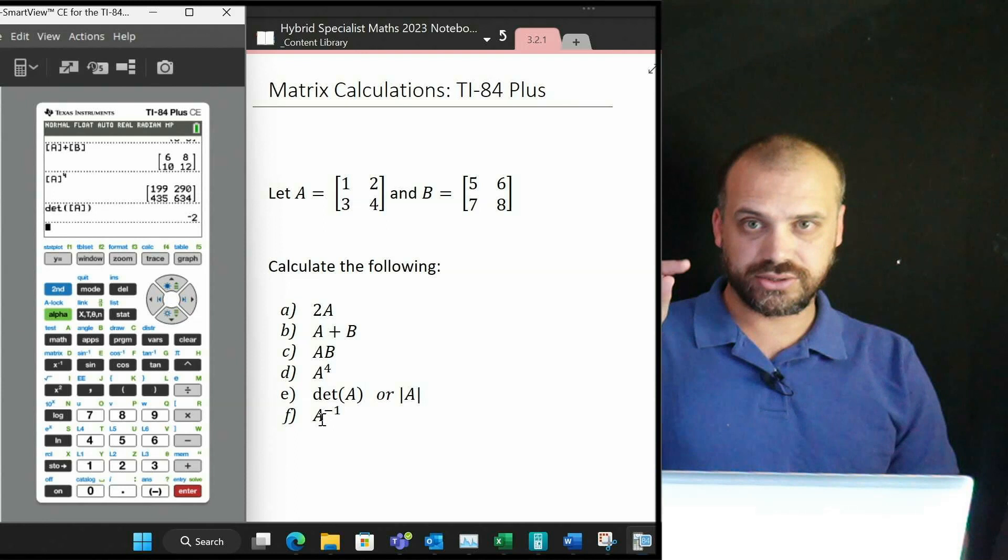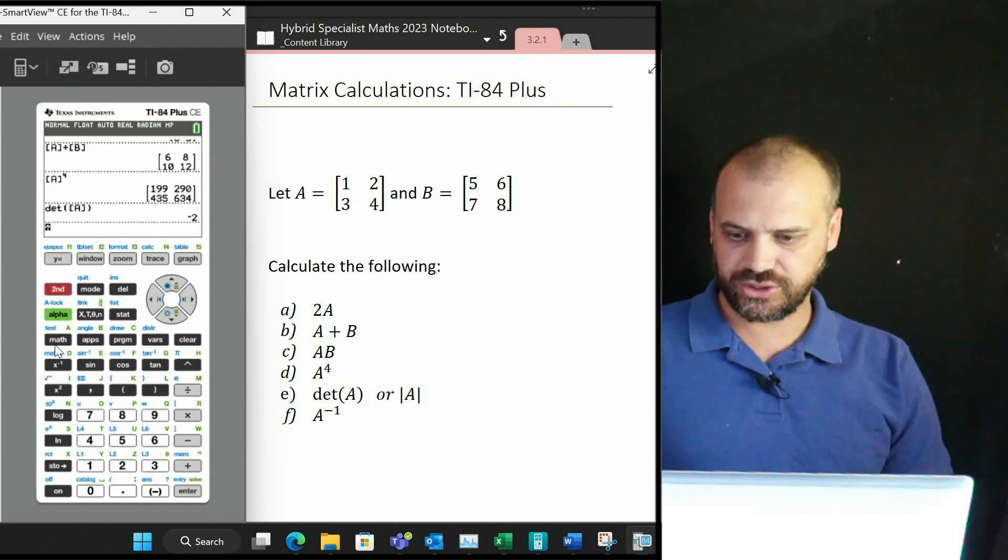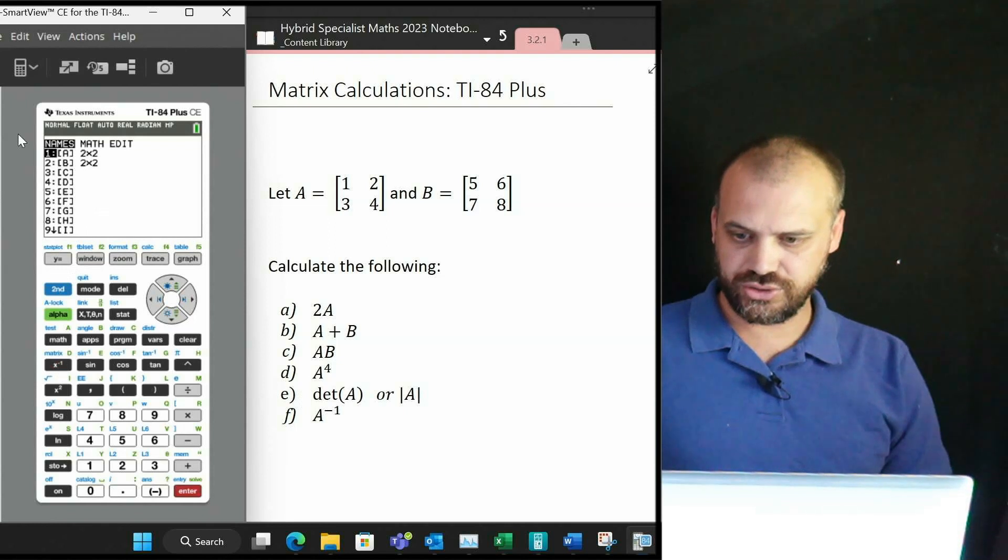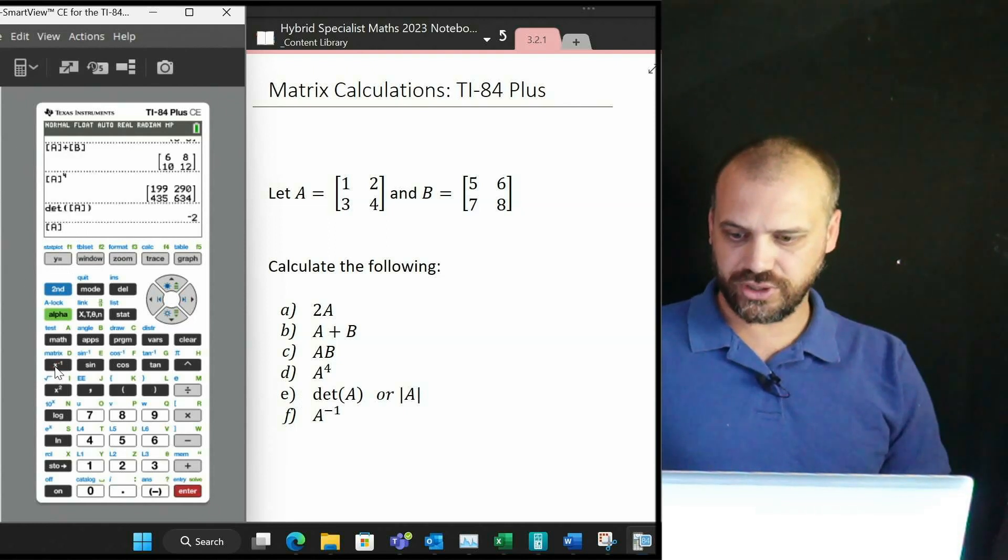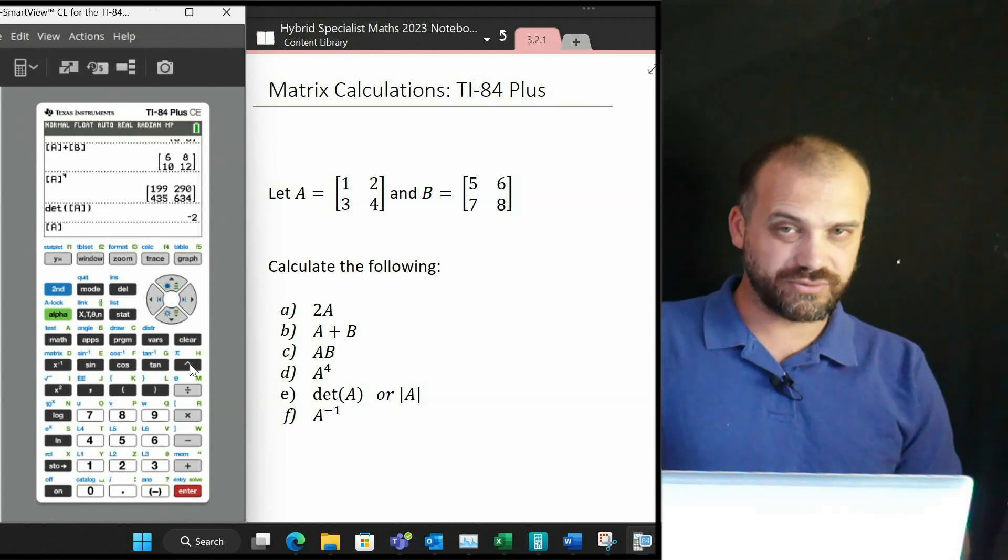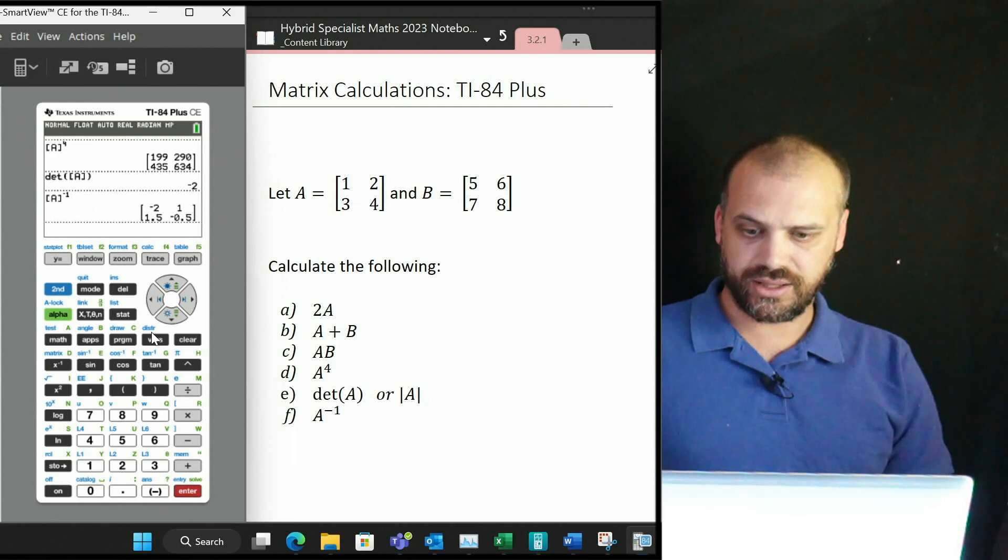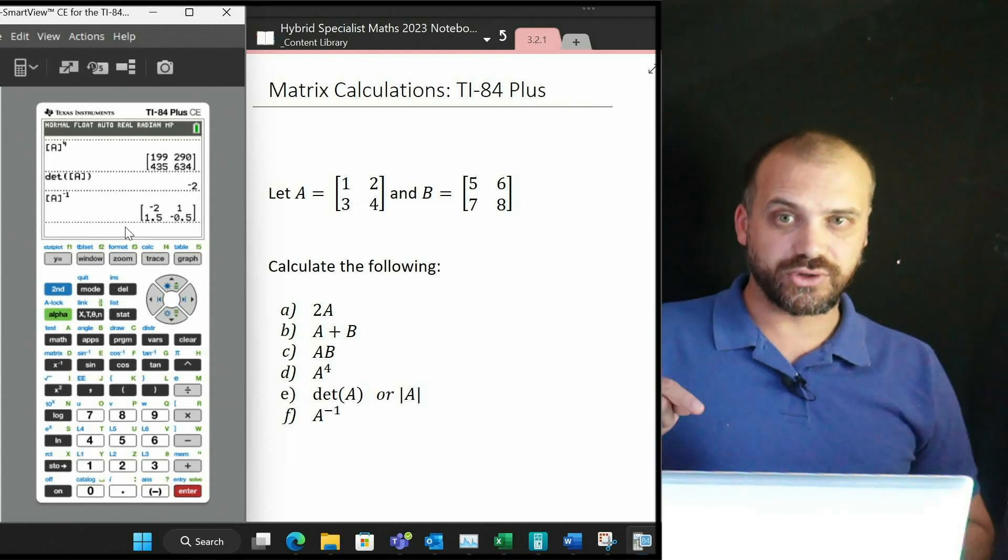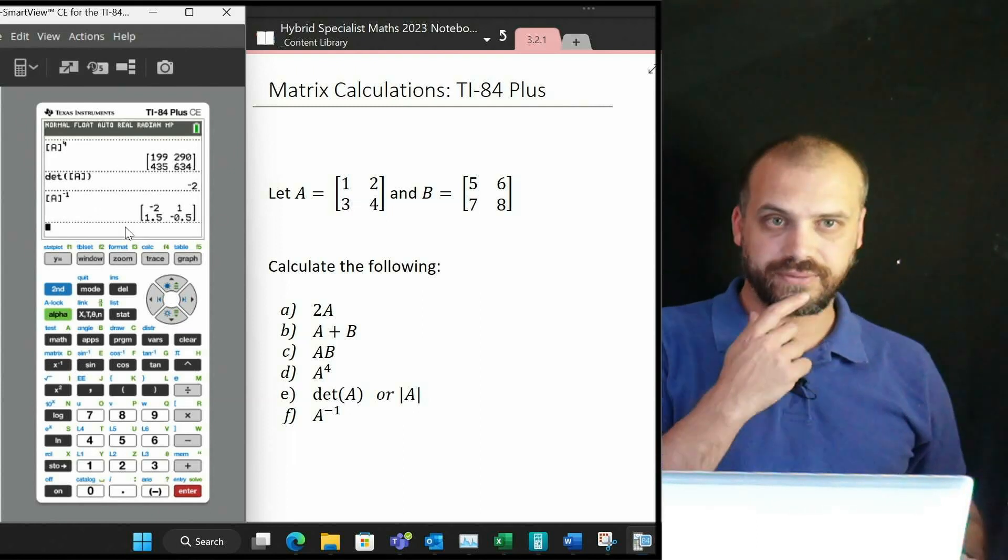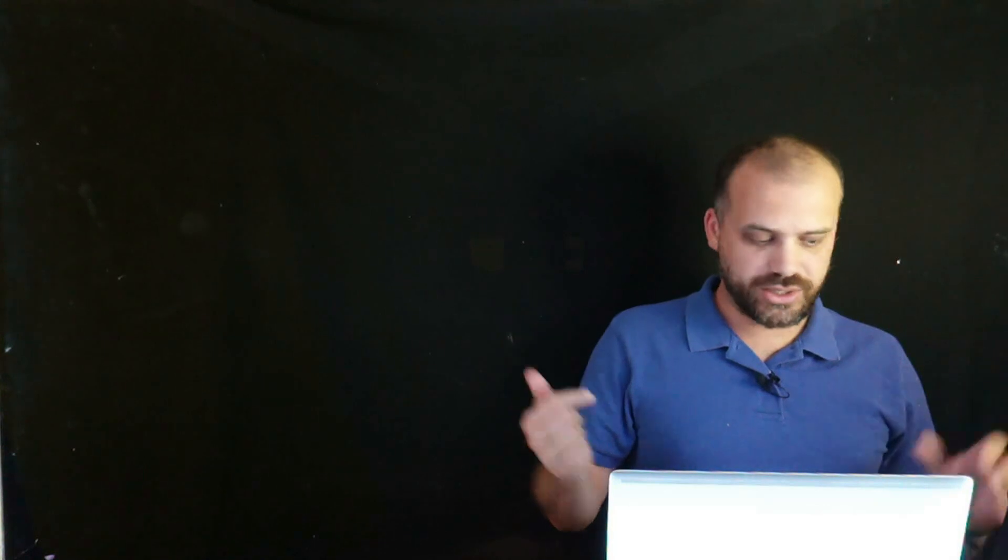Last of all, A to the power of negative 1, the inverse of A. We go second function matrix, choose your matrix, and then you've got to click this button here—you can't click this one. To the power of negative 1 doesn't like it. To the power of negative 1, and there we have our inverse of matrix A. Relatively straightforward as you can see—keep going into that matrix view and away you go.